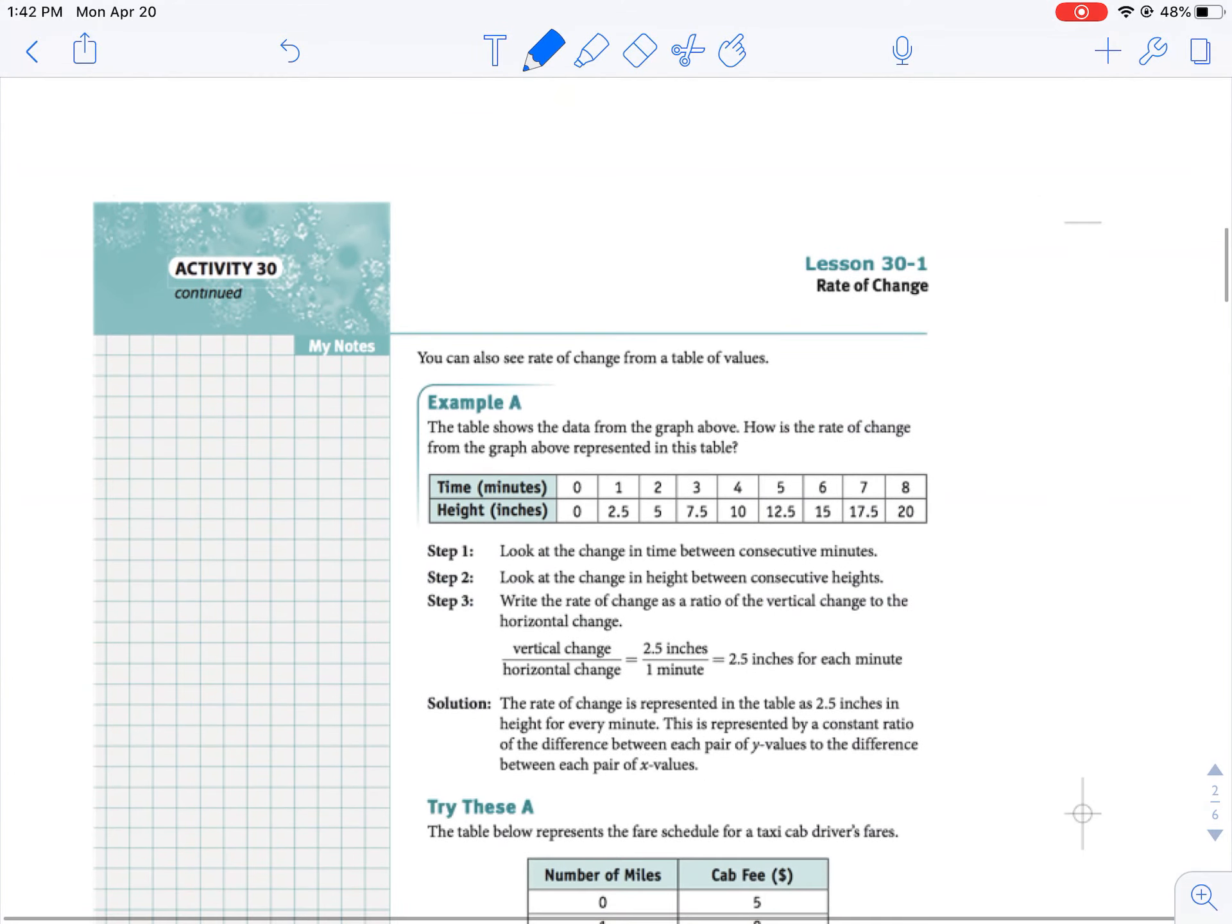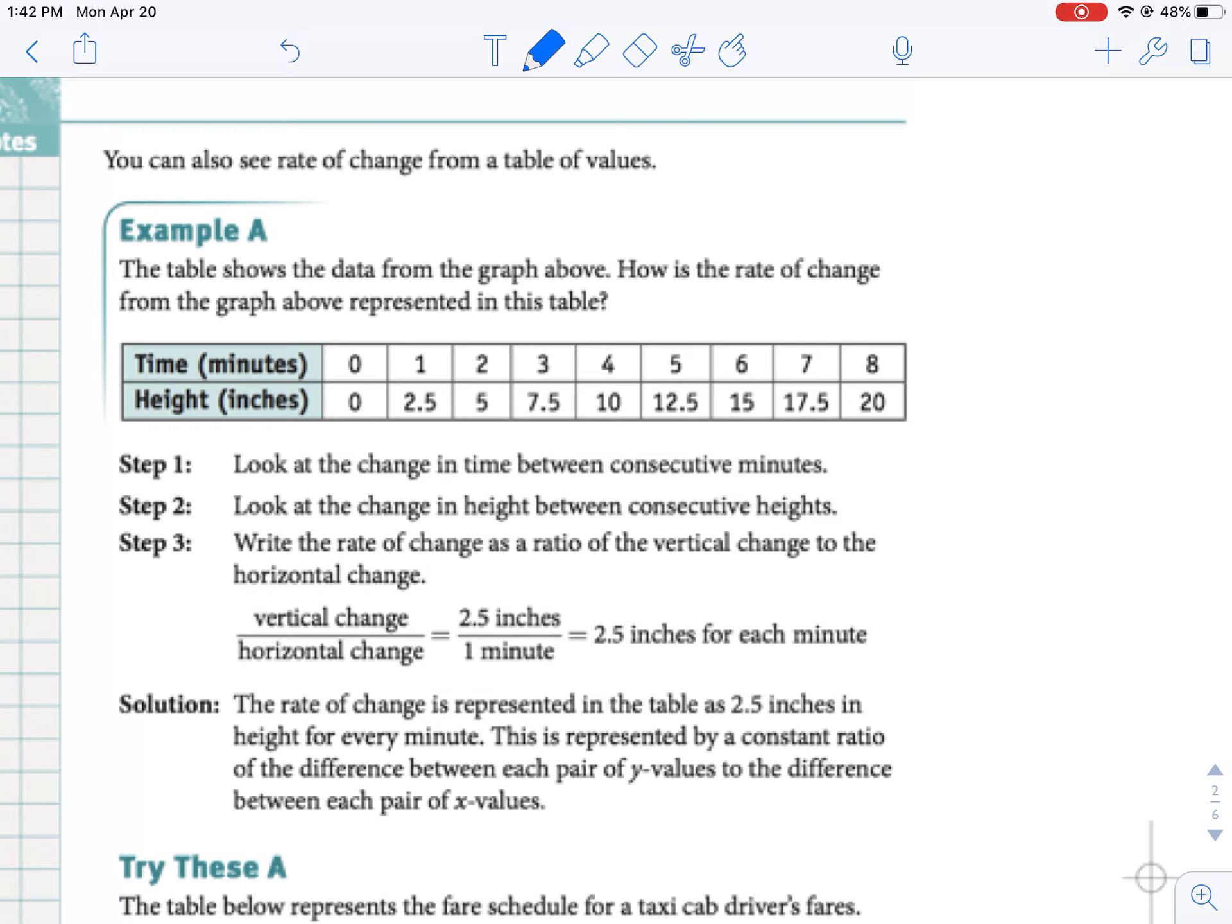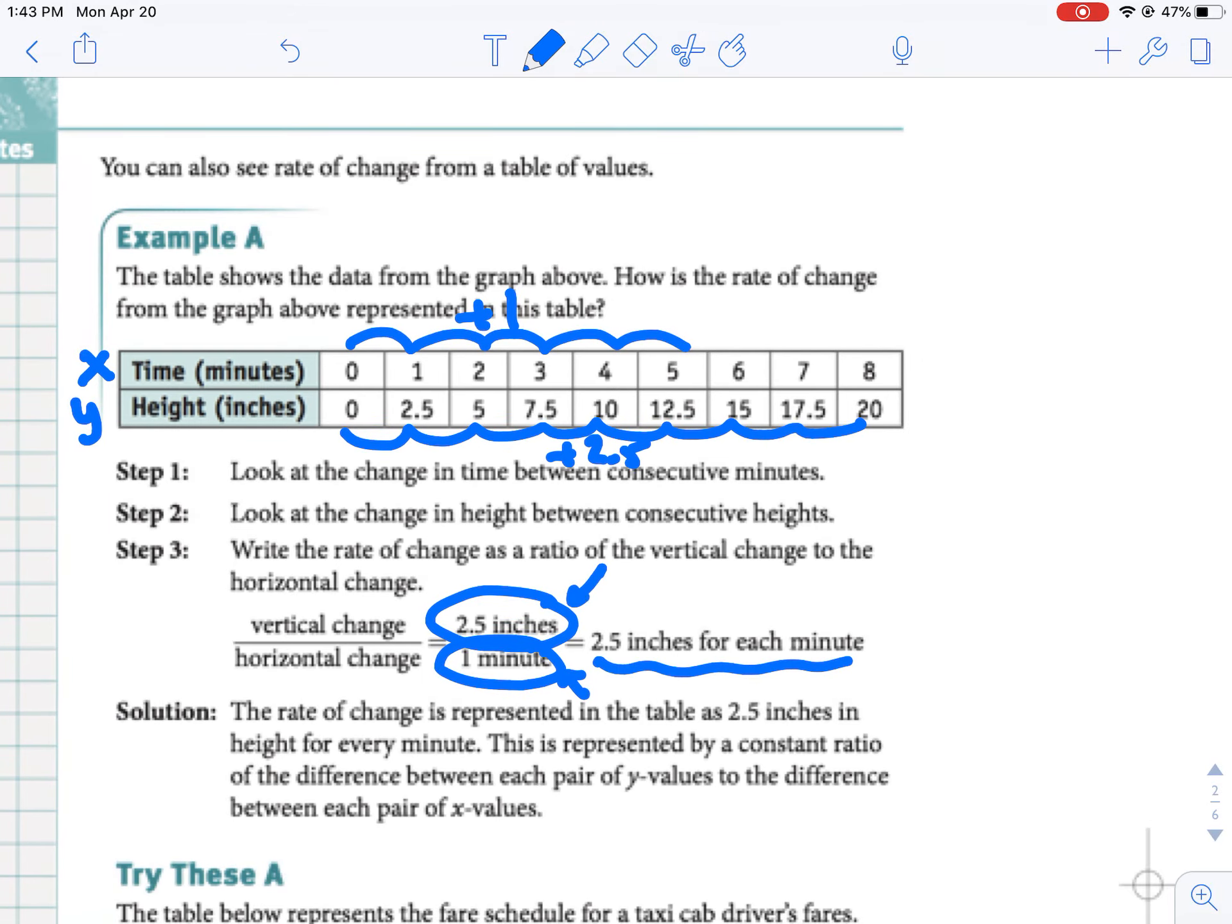All right, so taking a look at the next problem, it says you can also see rate of change from a table of values. If X is the time in minutes and Y is the height in inches, the first thing we have to do is look for the changes in both of them. So if you notice, these are all going up 1. These are all the whole way down going up 2.5. So again, our Y values, our vertical change, our change in Y is 2.5, and our change in X is 1. So 2.5 divided by 1 is just 2.5. And again, on top, we had inches per every minute or per each minute. So in this case, our rate of change would be 2.5 or 2.5 over 1.